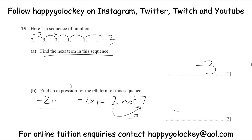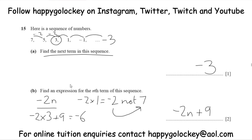Before we go off celebrating that we've got the right answer and a 2-mark, you should always check your answer. Let's choose a random term — I'm going to go for the third term, which should be 3. So we do minus 2 multiplied by 3, then add 9. Minus 2 times 3 is negative 6, and negative 6 plus 9 does in fact give us 3. So we've checked it works.